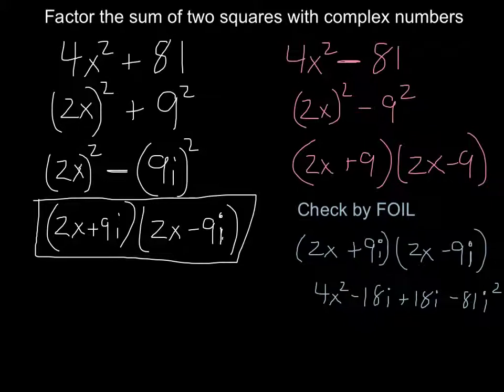Like I said, these two middle terms are going to cancel each other out. And because the 81 is multiplied by negative 1, we do get the positive 81, as in the very first step.